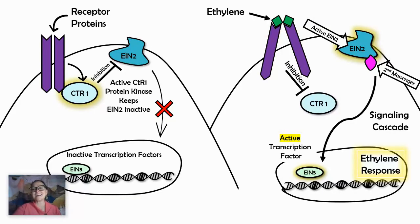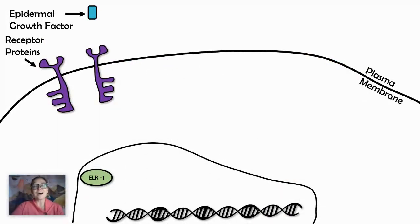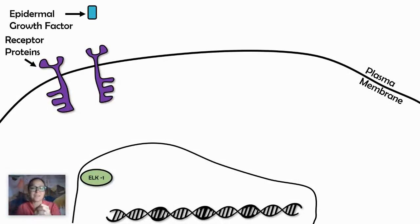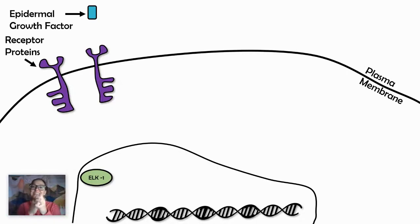This was our first example of a signal transduction pathway that relied on inhibiting other molecules instead of always just activating them. Now we're going to look at our last protein-based hormone example. Our cells: when we talk about how you get from a sperm swimming into an egg — your one-cell origin — to now being made of 30 to 40 trillion cells, your one cell divided and became two by mitosis, then four, then eight, and so on, and you just kept dividing.